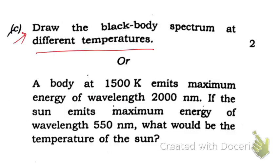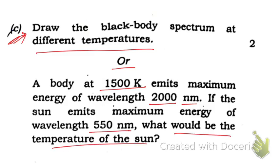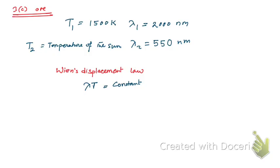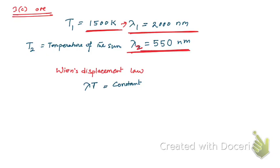The next part of 3c is a numerical: a body at 1500 Kelvin emits maximum energy at a wavelength of 2000 nanometers. If the sun emits maximum energy at a wavelength of 550 nanometers, what is the temperature of the sun? We'll use Wien's displacement law: λT = constant. Here T1 = 1500 K, λ1 = 2000 nm, λ2 = 550 nm, and we need to find T2.